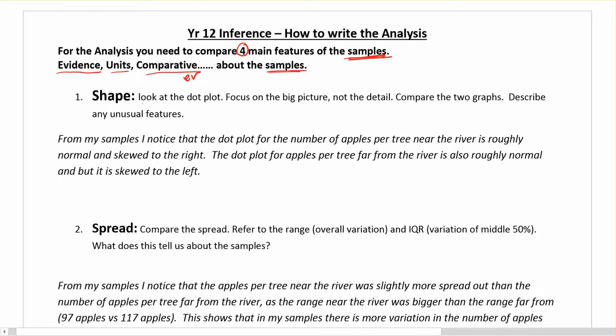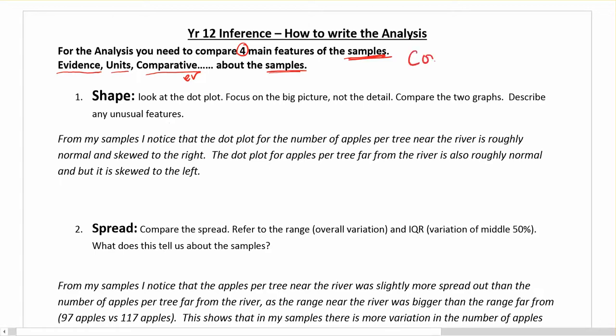The four things we have to talk about — I'm going to start with shape. Here you're going to look at your dot plot and focus on your big picture, not the little tiny details. Compare the two graphs. If you have anything unusual, like huge outliers or a giant cluster of points, make sure you describe those. And this has to be in context — you need to put your variable in there, making sure you're talking about exactly the context of the situation. In this case, this is apple trees and apples per tree.